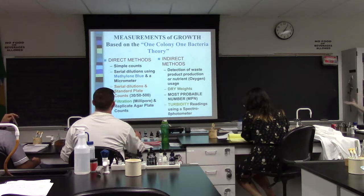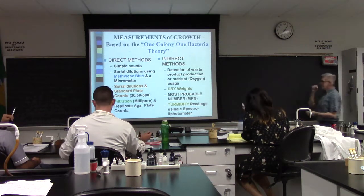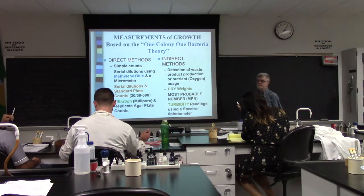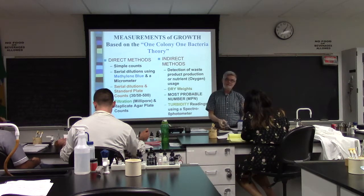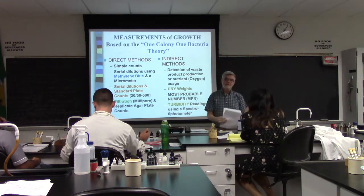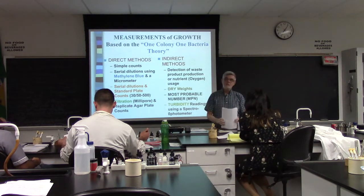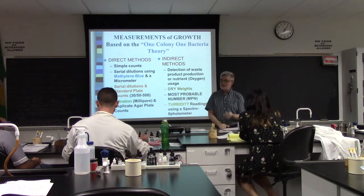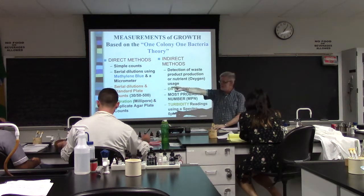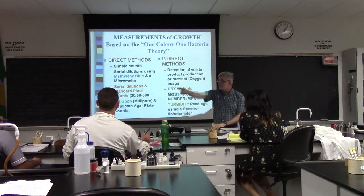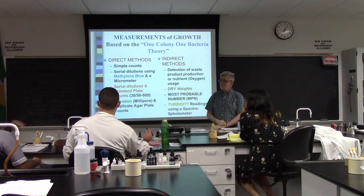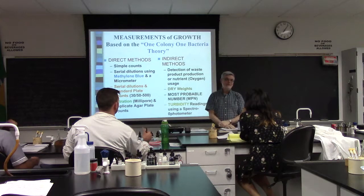So the next part of this chapter is how do you measure growth. Everything in science is direct or indirect. If I wanted to measure how many people in this room directly, I would count — you're number one, two, three, four. That's direct counting.